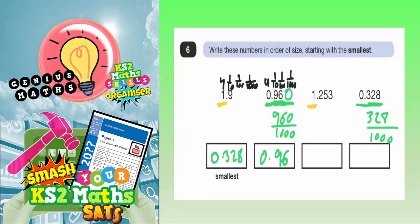So 1.9 is the same as 1 unit, 9 tenths, no hundredths and no thousandths. So this is like saying 1.900 and this is like saying 1.253. Well, 1.253 is going to be smaller than 1.900.